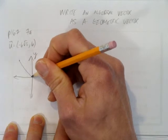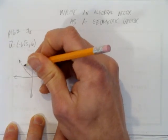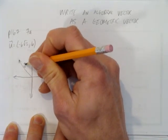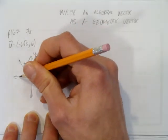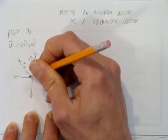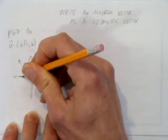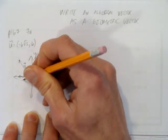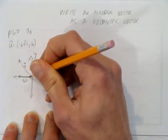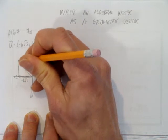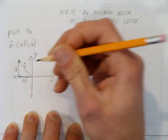So our vector u ends up here. We can write that vector u as a combination of its two components. That is, go out negative 6 root 3 on the x axis and go up positive 6 on the y axis.